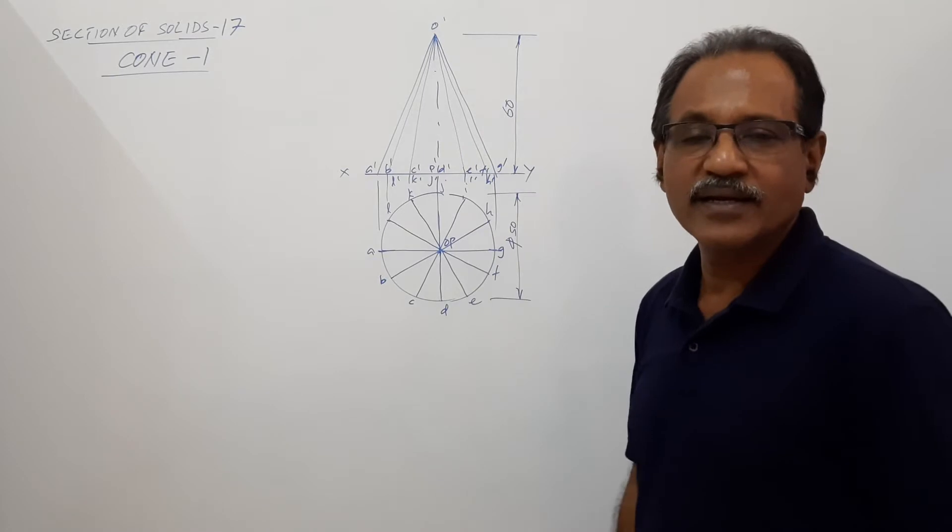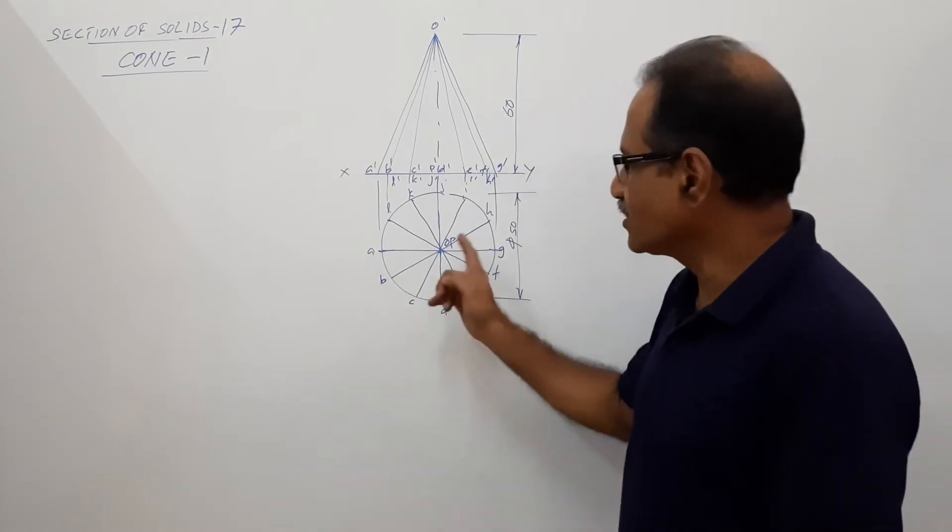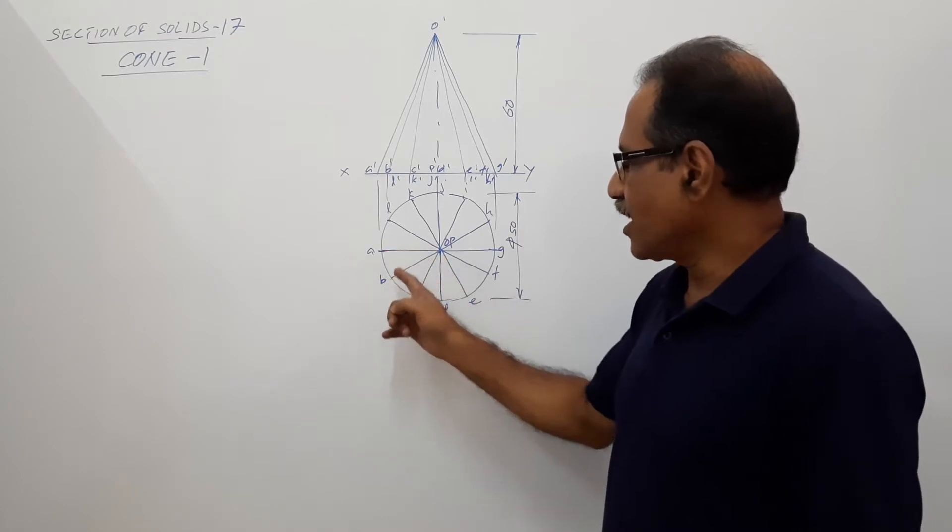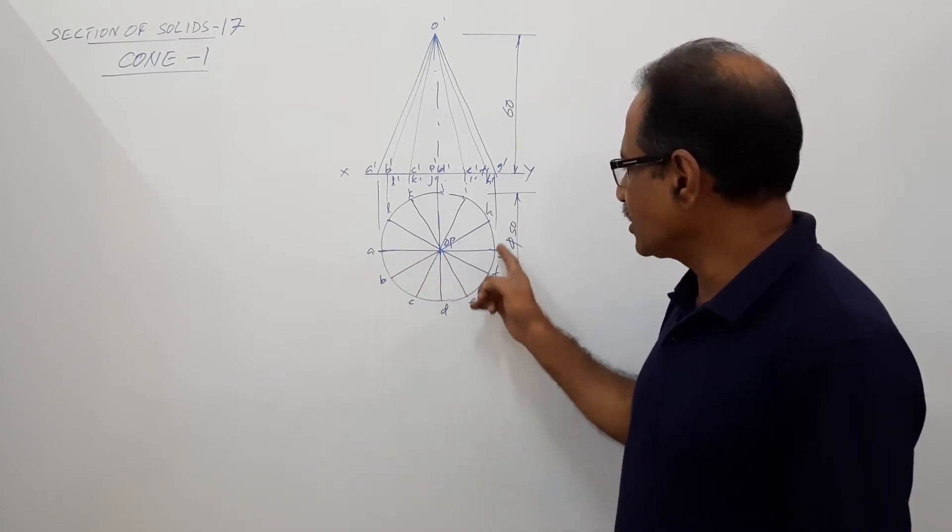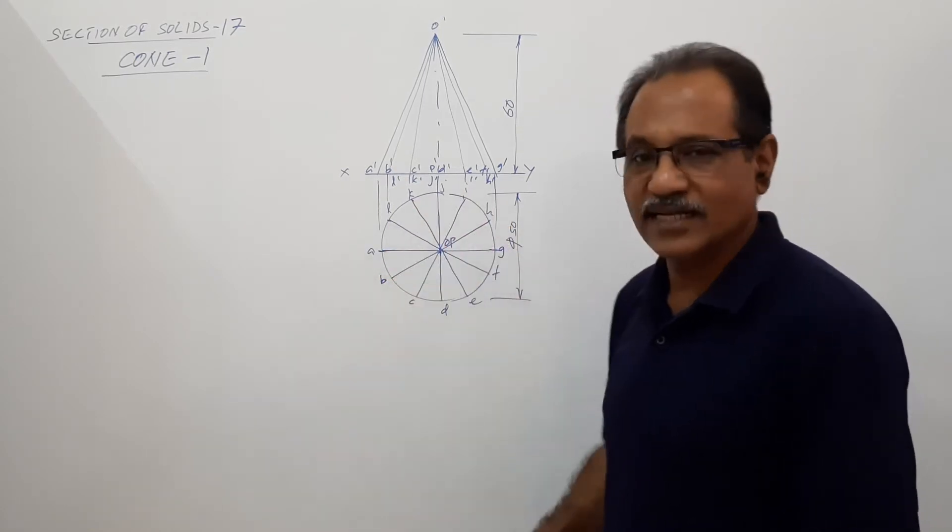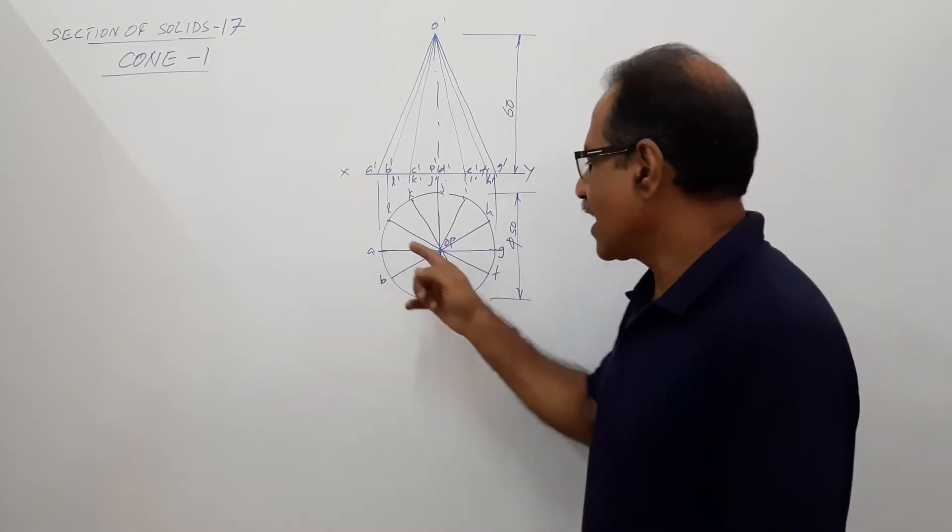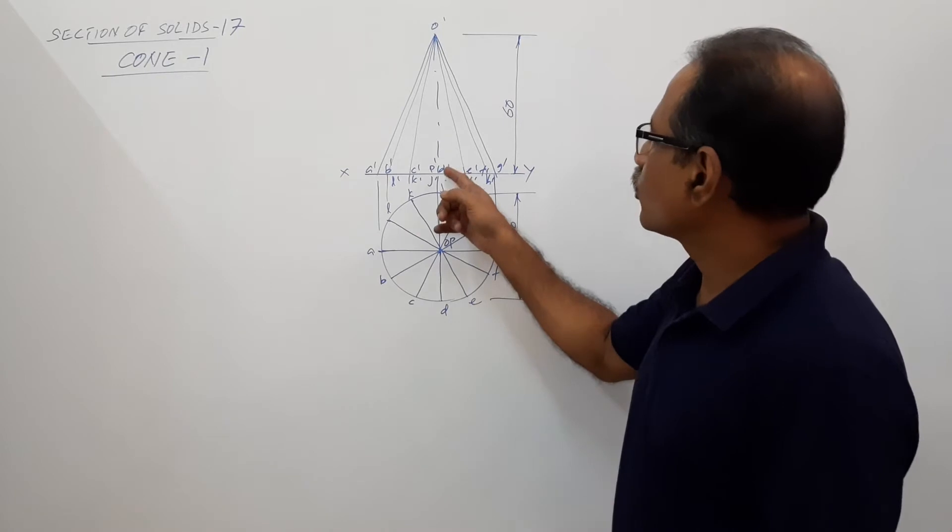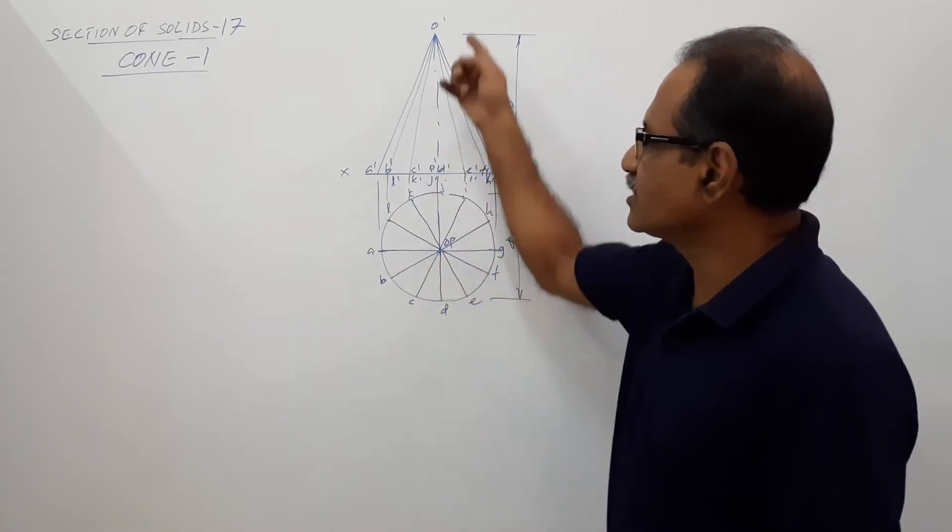I take 12 generators on the surface body of the cone: A, B, C, D, E, F, G, H, I, J, K, L are the 12 points on the base circle. I am connecting them to the apex O. O dash E dash is the axis. I have shown the radius.